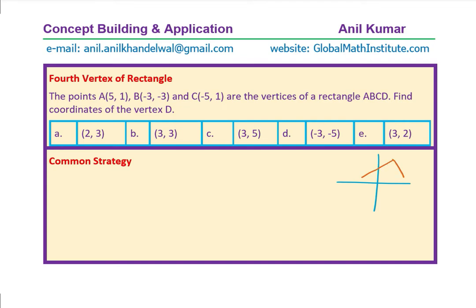We have our points, which are A, which is 5,1. B, which is (-3,-3), C and D, which we need to figure out. Let me write down, this is 5,1. It becomes easy. B is (-3,-3). C, (-5,1). D we need to find.